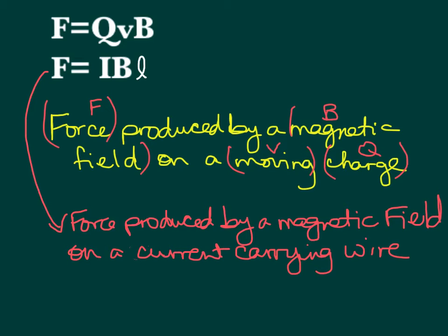Those are our two main force equations, and we're going to use them in many ways. If you look at force equals IBL, what is I? Current is moving charge — that is how fast the charge is moving, and then you have that length factor. So this is your meters, coulombs per second, and this gives coulombs times meters per second. They're different forms, basically, of the same equation.